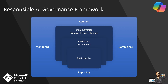The auditing process highlights areas for improvement and ensures AI systems remain transparent and accountable. Looking at monitoring — continuous monitoring is essential for maintaining the integrity of AI systems over time. It involves tracking the performance of AI applications, ensuring they operate as intended without deviating into unethical or discriminatory behavior. Monitoring tools can detect anomalies or model drift. Reporting mechanisms within the RAI governance framework ensure transparency and accountability, documenting findings from audits for relevant stakeholders.